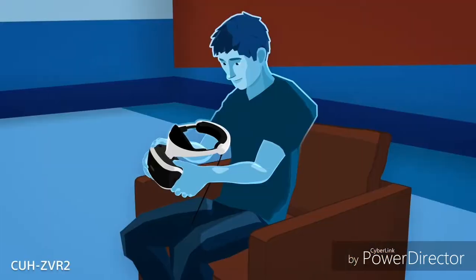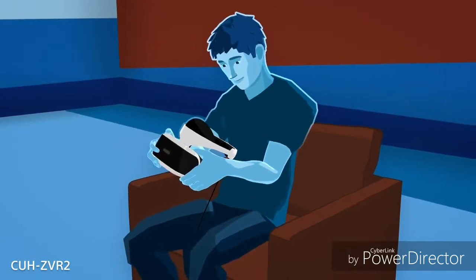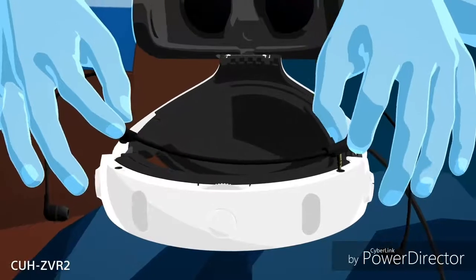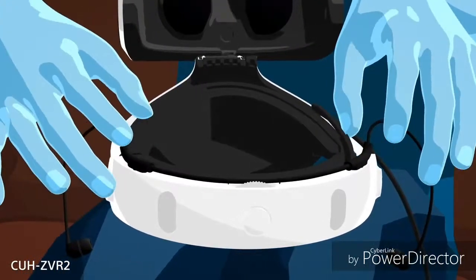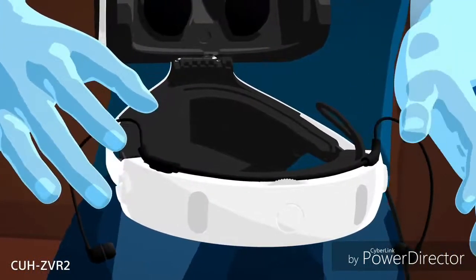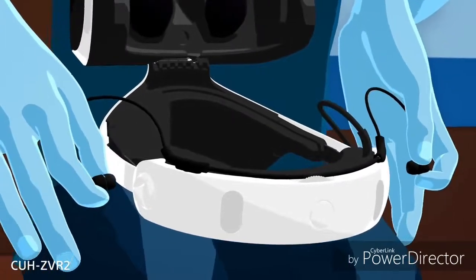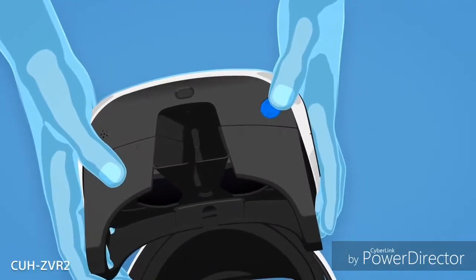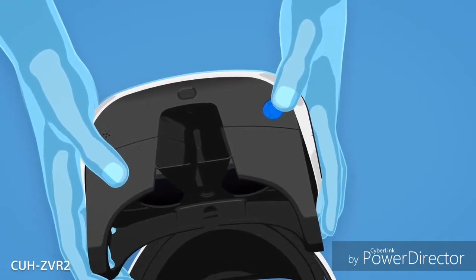Keep your controllers handy. If you have the CUH ZVR 2, you'll first need to connect the stereo headphones to your VR headset. When you're not using your headphones, use the earpiece holders on your VR headset to store them out of the way. The volume and mute buttons are located on the bottom left side of the scope, as well as the power button.